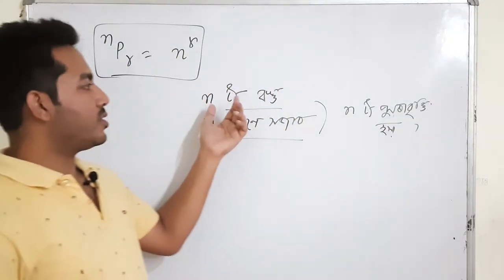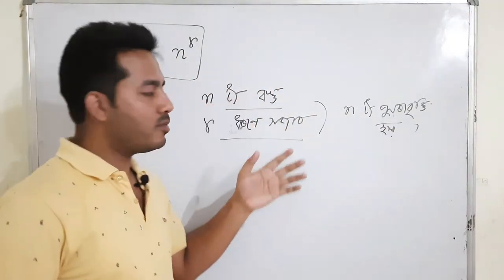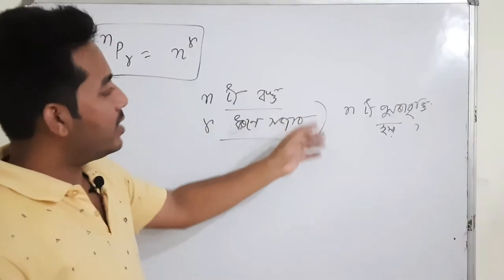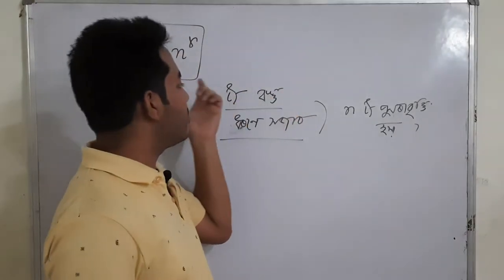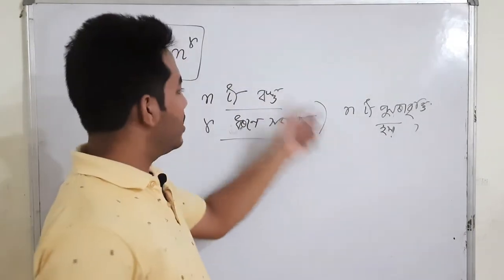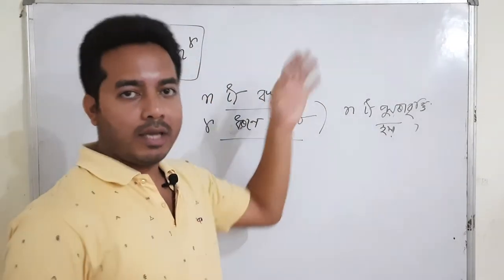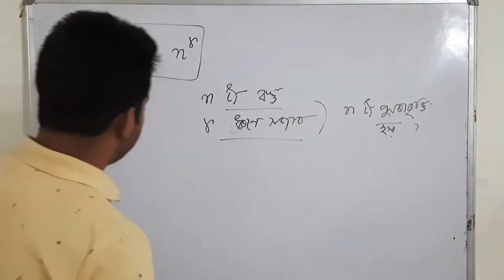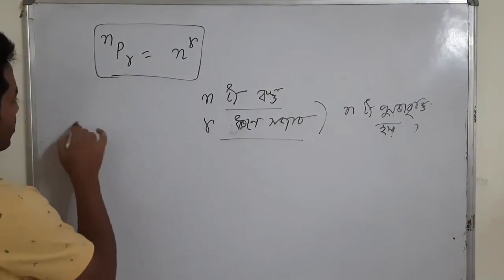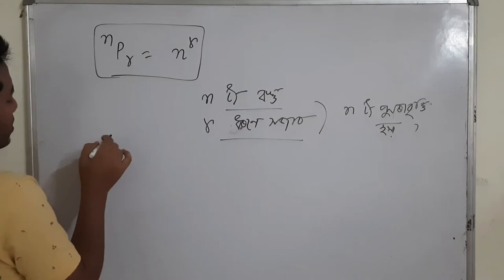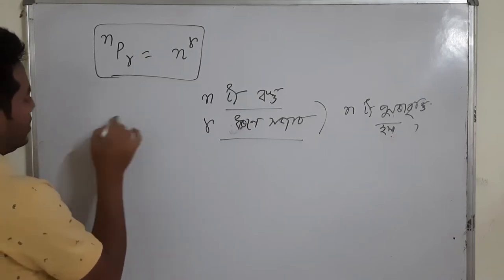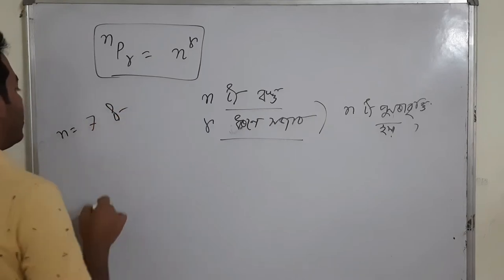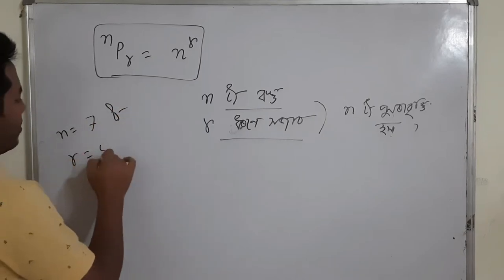That means there are n numbers of objects given to be arranged in r numbers of ways, and it is given that the objects can be repeated n times. So, I have to say that n equals 7 and r equals 5.